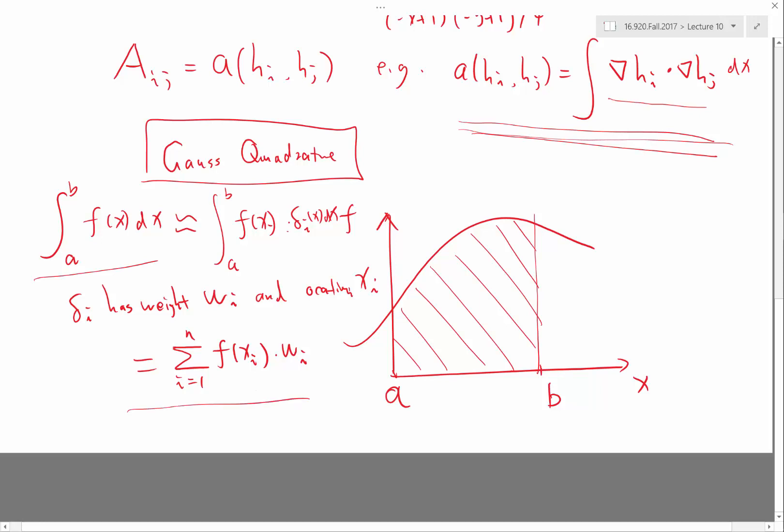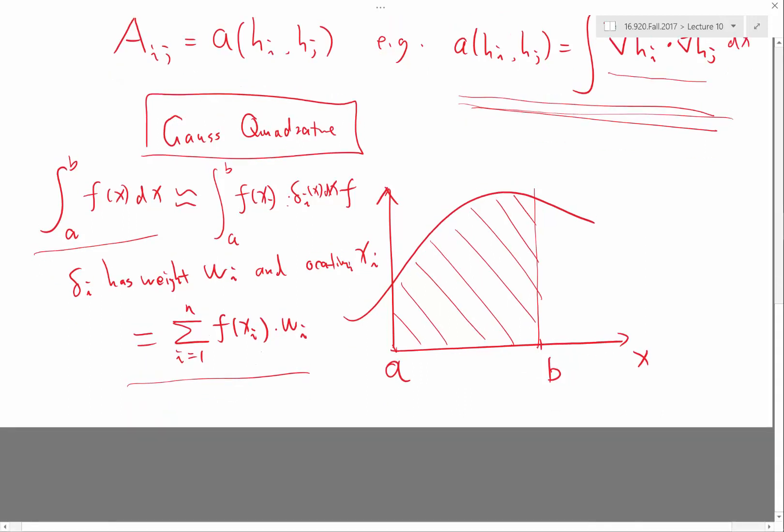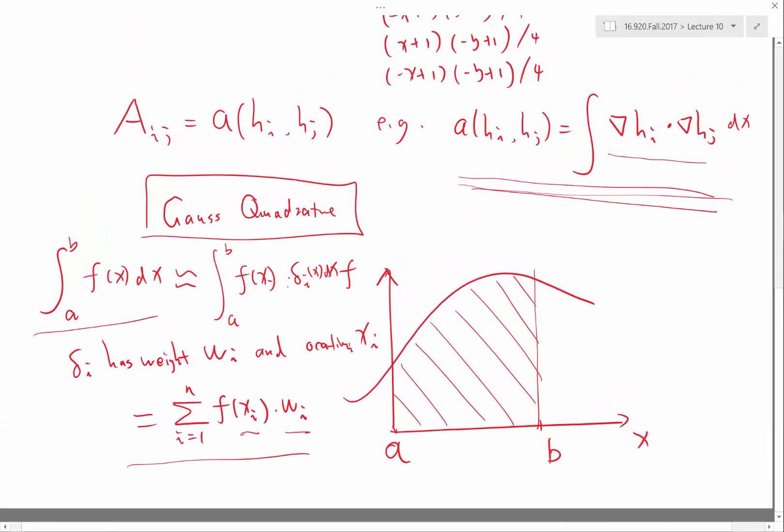And this finite summation only requires the function evaluation at a discrete set of points xi. So the delta functions which are represented by the location and weights are derived in such a way to make this formula exact for as high order polynomial as possible. So what does that mean? That means if I have n delta functions, that means I have 2n coefficients to play with to make the formula as accurate as possible.